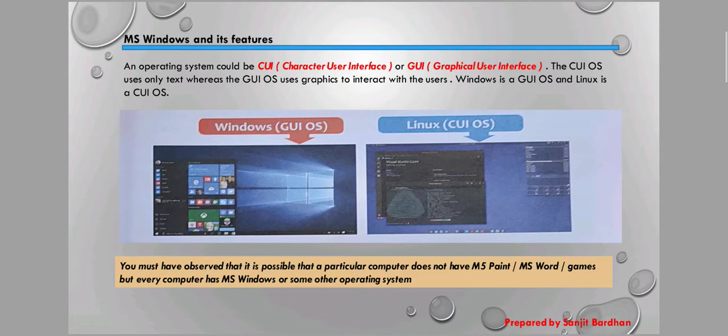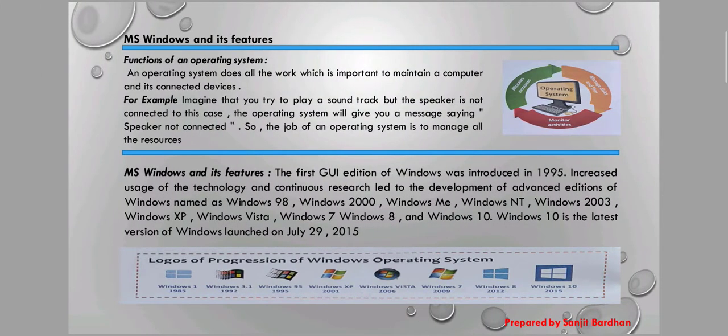You must have observed that it is possible that a particular computer does not have MS Paint or games — that is the software part. But every computer has MS Windows or some other operating system like Mac or DOS.